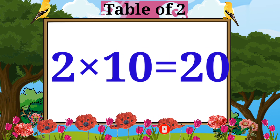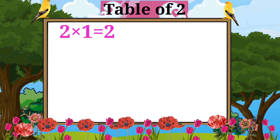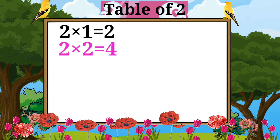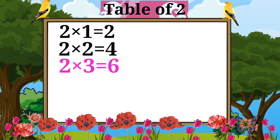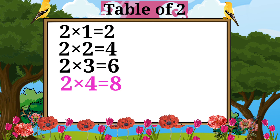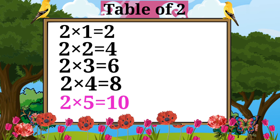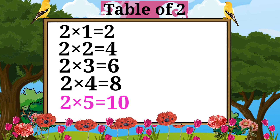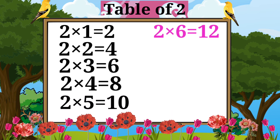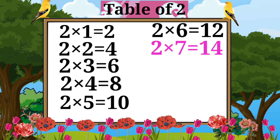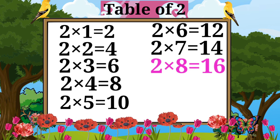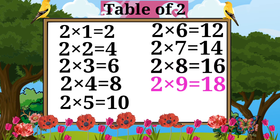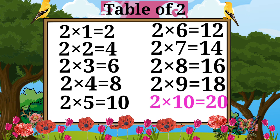Two ones are two. Two twos are four. Two threes are six. Two fours are eight. Two fives are ten. Two sixes are twelve. Two sevens are fourteen. Two eights are sixteen. Two nines are eighteen. Two tens are twenty.